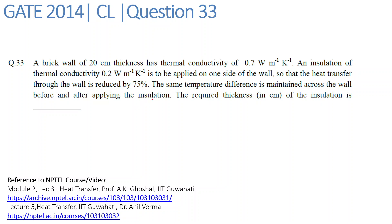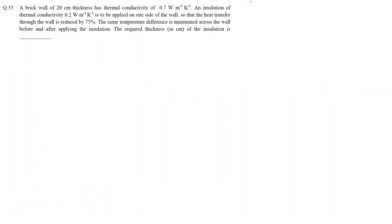The same temperature difference is maintained across the wall before and after applying the insulation. We have to find the required thickness of insulation in centimeters. Initially we have a brick wall, and later we are insulating the brick wall from one side, keeping the temperature difference in both cases the same, such that heat transfer is reduced by 75%.